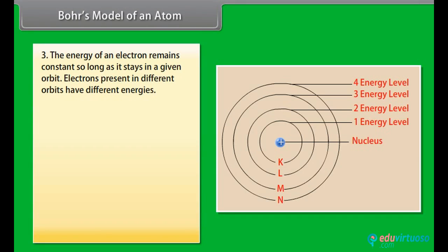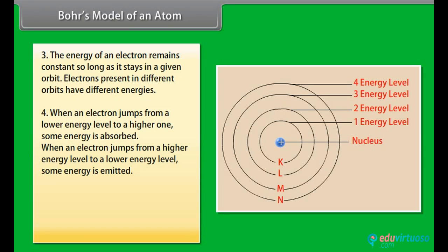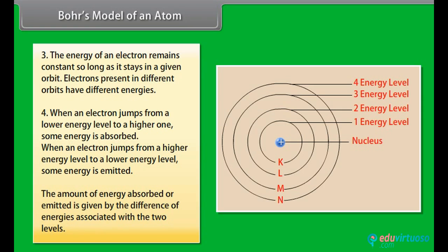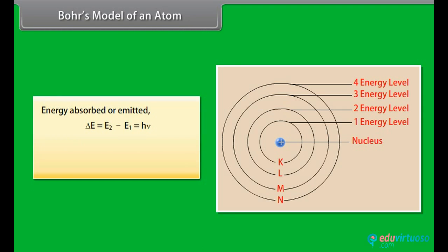The energy of an electron remains constant so long as it stays in a given orbit. Electrons present in different orbits have different energies. When an electron jumps from a lower energy level to a higher one, some energy is absorbed. When an electron jumps from a higher energy level to a lower energy level, some energy is emitted. The amount of energy absorbed or emitted is given by the difference of energies associated with the two levels. Energy absorbed or emitted, Delta E is equal to E2 minus E1, which equals H nu, where H is Planck's constant, and nu is the frequency of radiation absorbed or emitted.